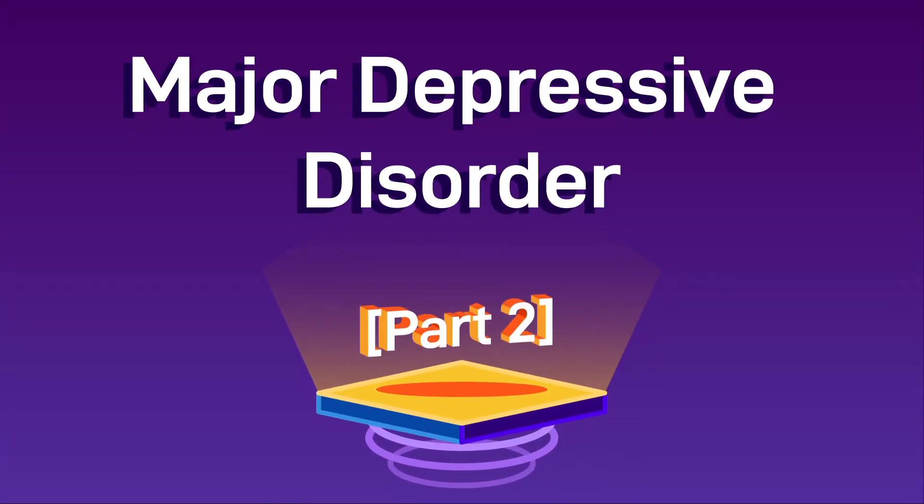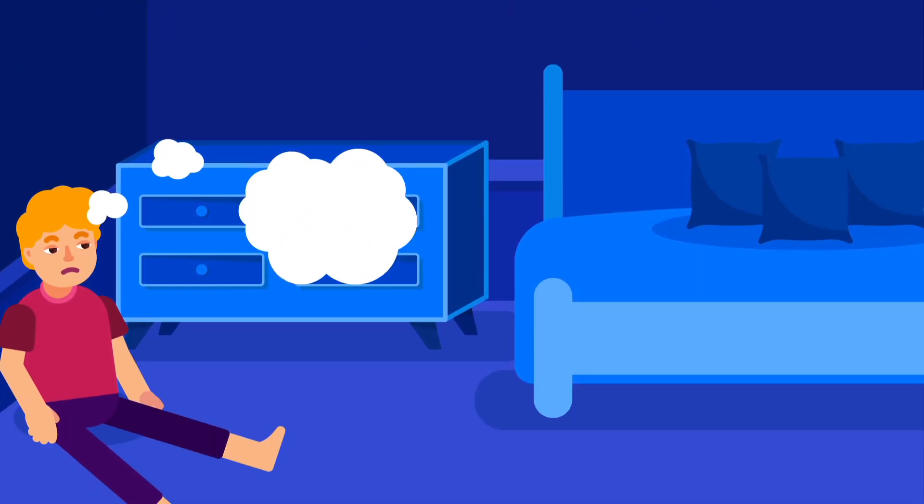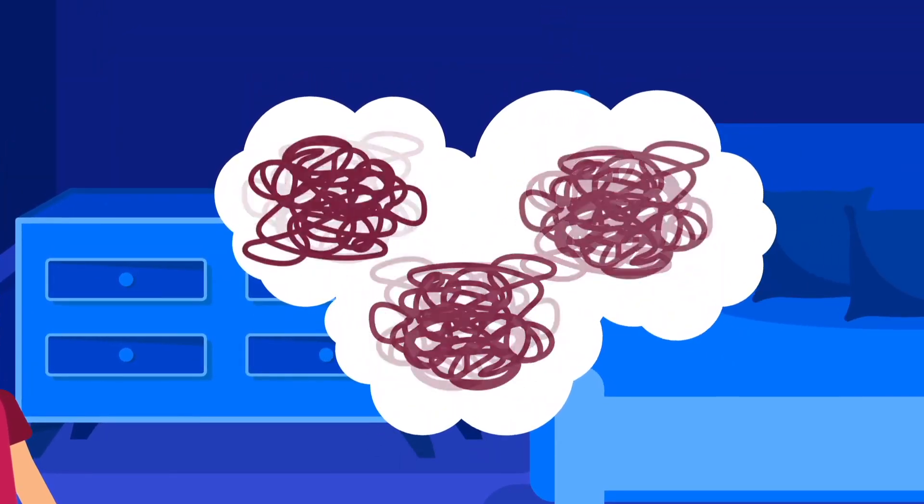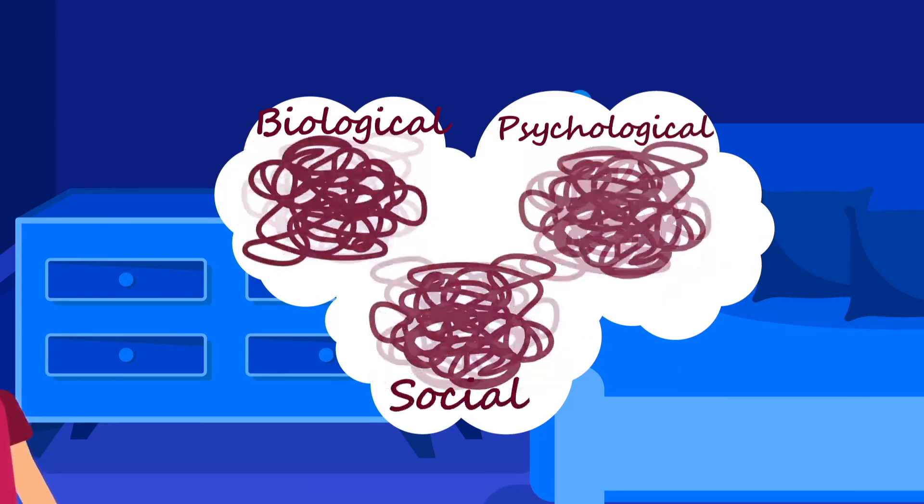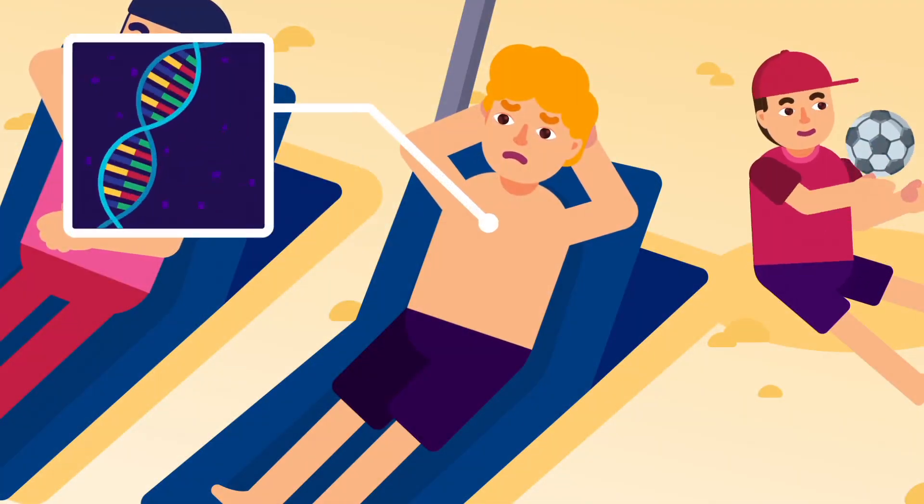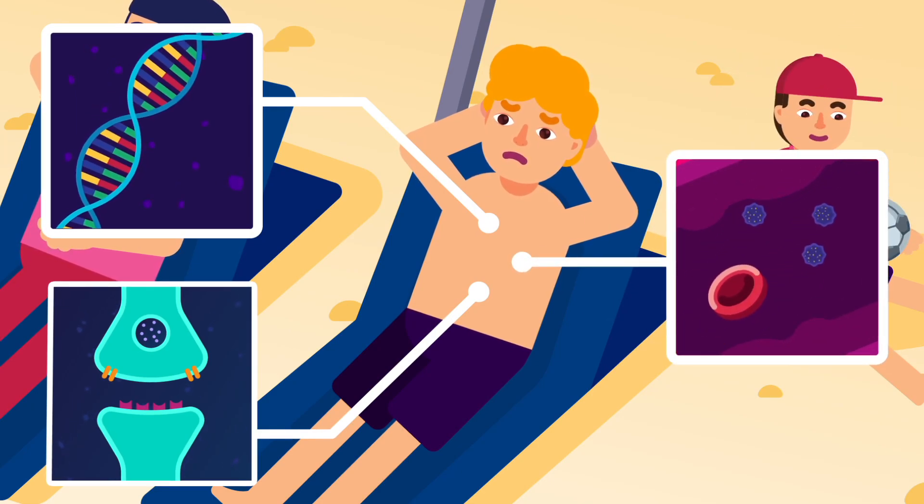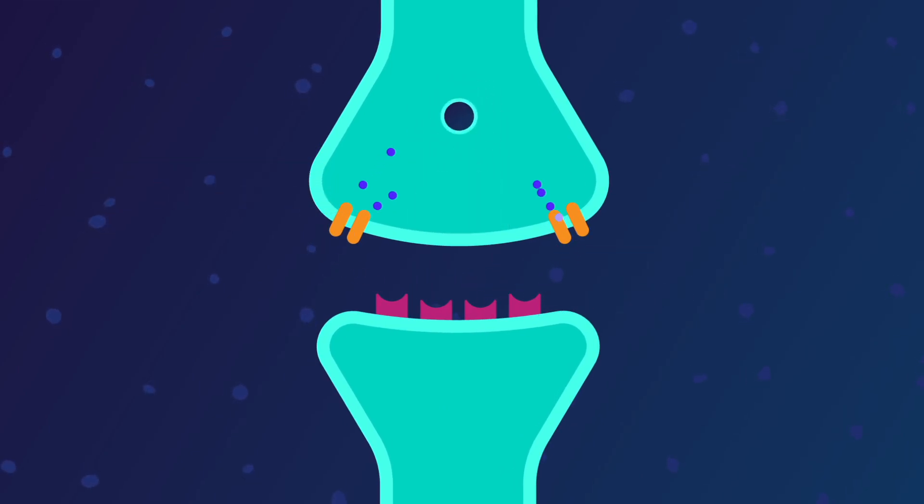Major depressive disorder part 2: etiology. Several predisposing factors that contribute to major depression can be broken up into three categories: biological, psychological, and social factors. Biologically, genes, neurons, and hormones likely play a role in causing depression. The imbalance in serotonin hormone due to the presence of mutation in serotonin transporter gene 5-HTT may underlie psychiatric disorders.